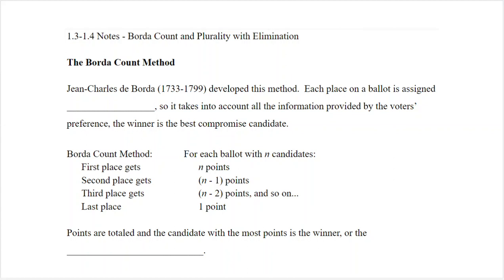Today we're going to take a look at two more voting methods: the Borda Count and Plurality with Elimination. The Borda Count method was named for Jean-Charles de Borda, a French mathematician in the 1700s. For this method, each place on a ballot is assigned points, so it does take into account all of the voters' preferences from their first choice to their last choice, and the winner is the candidate who has the most points.